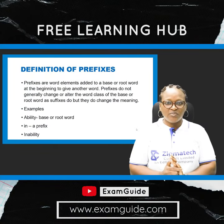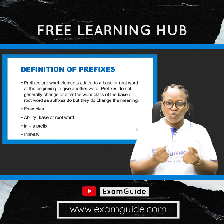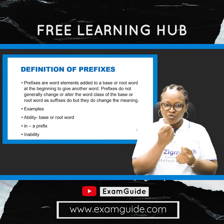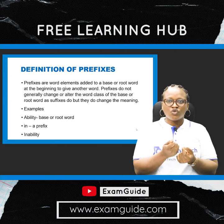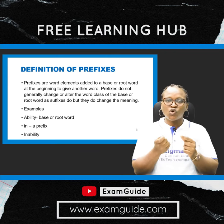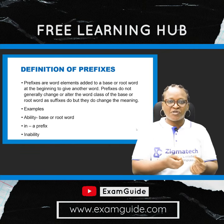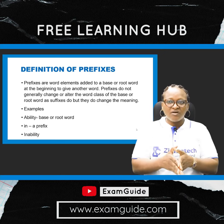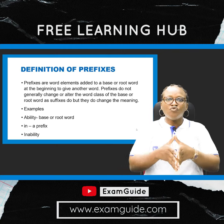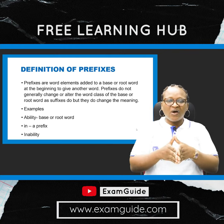Now, we said that prefixes are word elements added to a base or root word. That is to say, there is an original word, there is an existing word. Prefixes are just word elements — it can be a letter, it can be two letters, it can be three, it can be four. You add it at the beginning of a word. When you add it to the beginning of a root word or a base word, it gives you another word entirely.